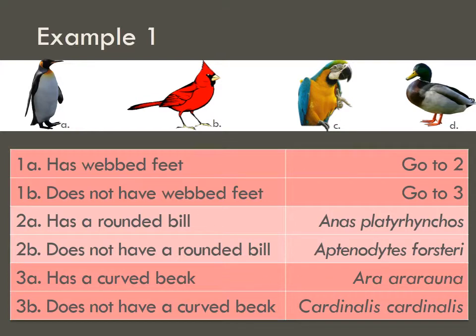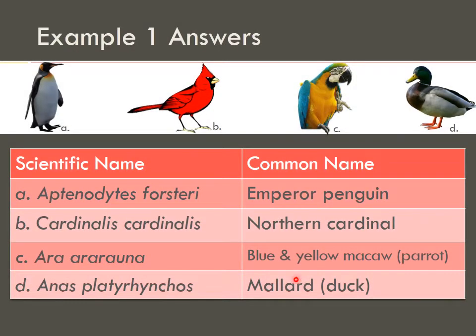Having a curved beak means this is the scientific name of our unknown. I am not asking you to be able to pronounce these — my only concern today is that you practice writing the scientific name. Here you can see unknown C and its scientific name, which is what we came up with. The common name is blue and yellow macaw, which is also a parrot.